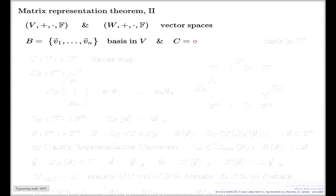And C—sorry, w₁, w₂, ..., wₘ will be the basis in W. So dimension of V is assumed to be n for Nicholas and dimension of W is assumed to be m for Mary.